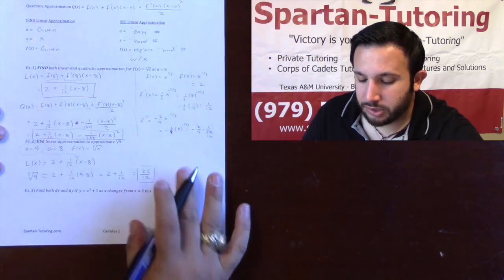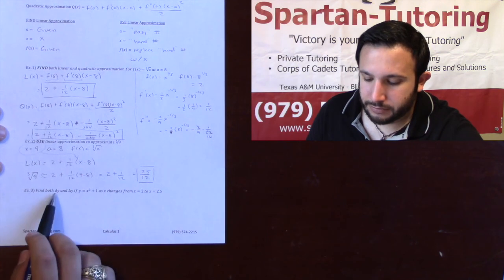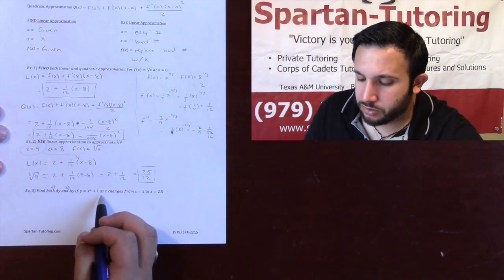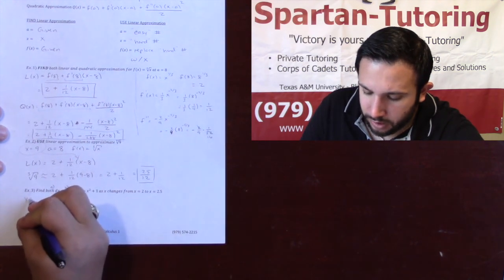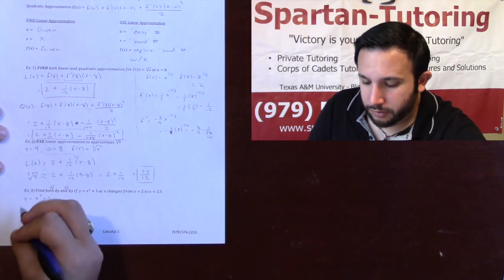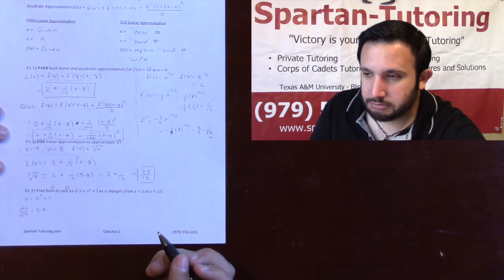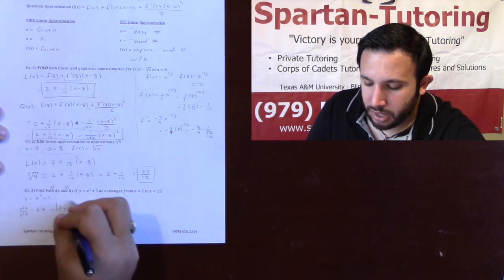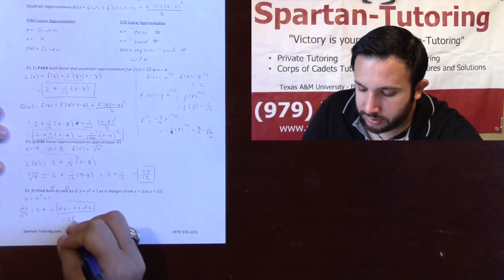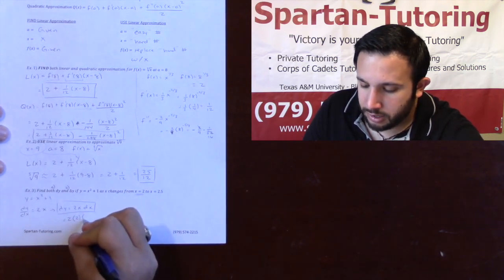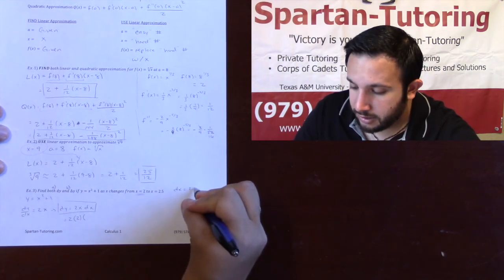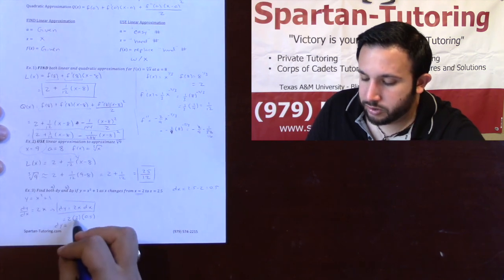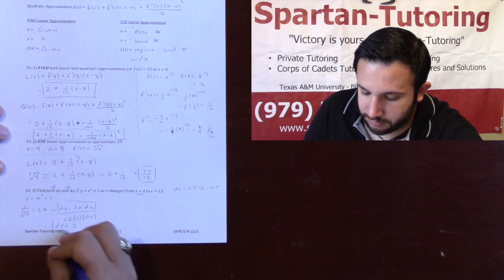The last topic is finding dy and delta y. For part a, find dy. If y equals x squared plus 1 as x changes from 2 to 2.5: the derivative dy/dx equals 2x, so dy equals 2x dx. Plugging in numbers: use x equals 2 (the first value), and dx equals 2.5 minus 2 equals 0.5. So dy equals 2 times 2 times 0.5, which equals 2.